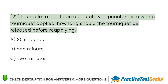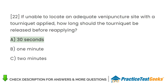If unable to locate an adequate venipuncture site with a tourniquet applied, how long should the tourniquet be released before reapplying? A. 30 seconds. B. 1 minute. C. 2 minutes.